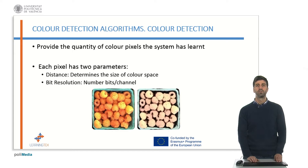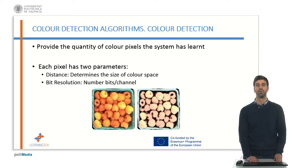The color detection algorithm is a function that shows the quantity of color pixels in percentages regarding the ROI and the name of the color. The color shown must be taught previously to the system according to bit resolutions and distance parameters. The bit resolutions indicate the number of bits for each channel, while distance parameters determine the size of the color space, so we can work with the same color with different hues. It is advisable to work with a bit resolution of seven or eight bits per channel. On the image on the slide, it can be seen how the function works, providing the colors that the system has learned.